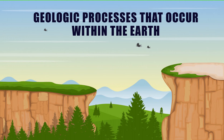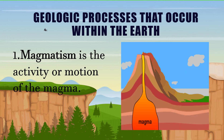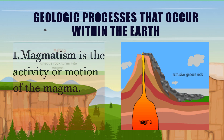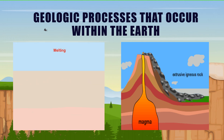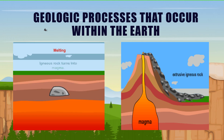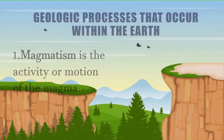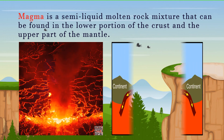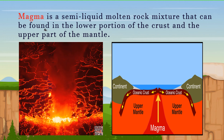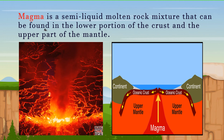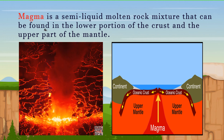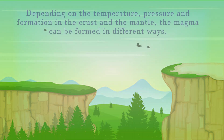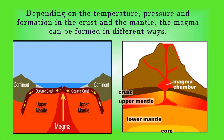Geologic processes that occur within the earth. 1. Magmatism is the activity or motion of the magma. Rocks that are subjected to high temperature and pressure melt and become magma. Magma is a semi-liquid molten rock mixture that can be found in the lower portion of the crust and the upper part of the mantle. Depending on the temperature, pressure and formation in the crust and the mantle, the magma can be formed in different ways.